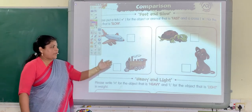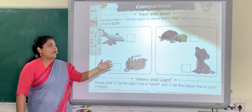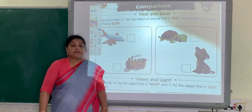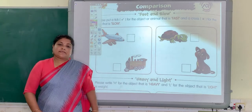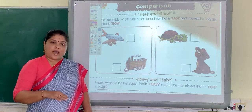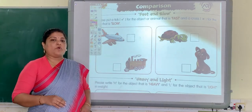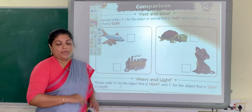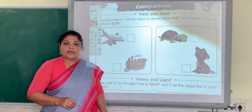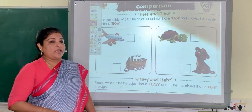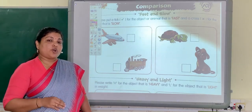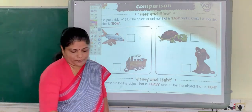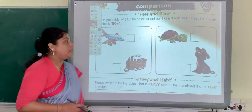You can see two vehicles and two animals here. Children, some objects move fast and some objects move very slow. This concept will help you to identify whether the object is moving fast or slow.